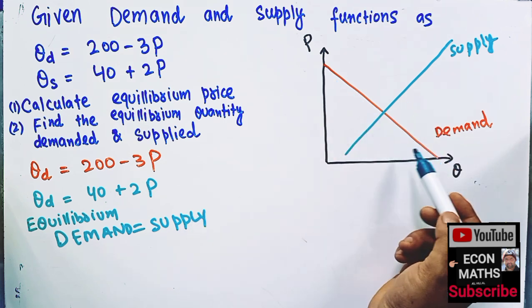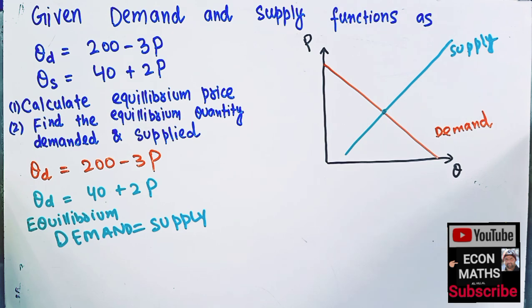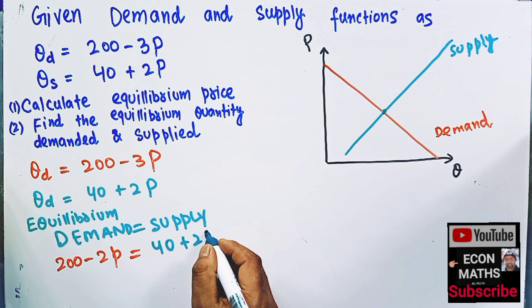And where it happens? Where demand function and supply functions intersect. At this point, we will get equilibrium. So demand function is this, 200 minus 2P. Let us write it here. So we have 200 minus 2P should be equal to the supply function, which is 40 plus 2P.